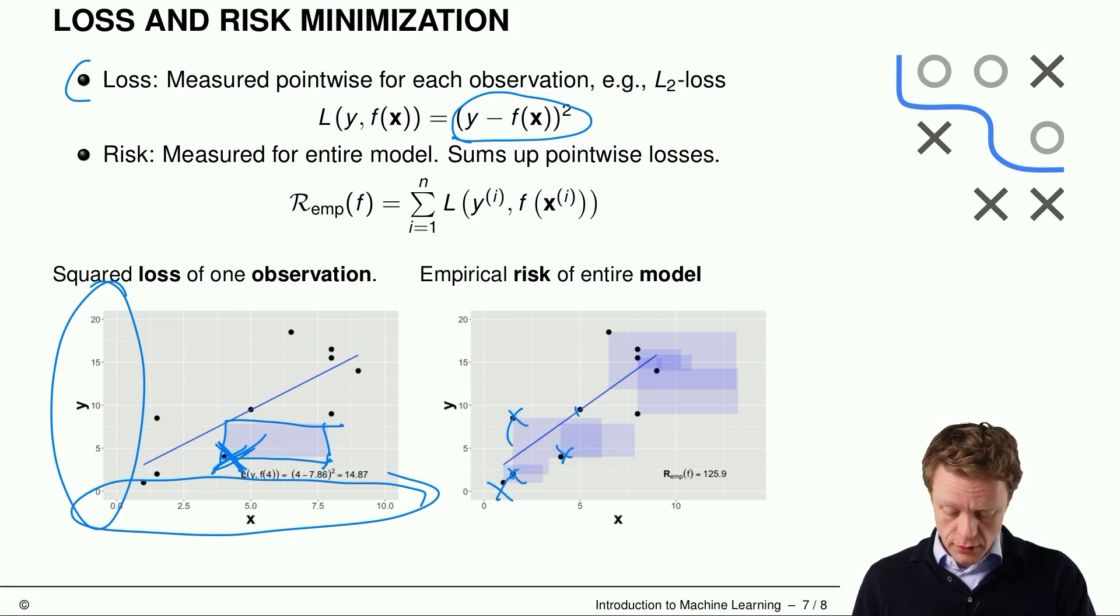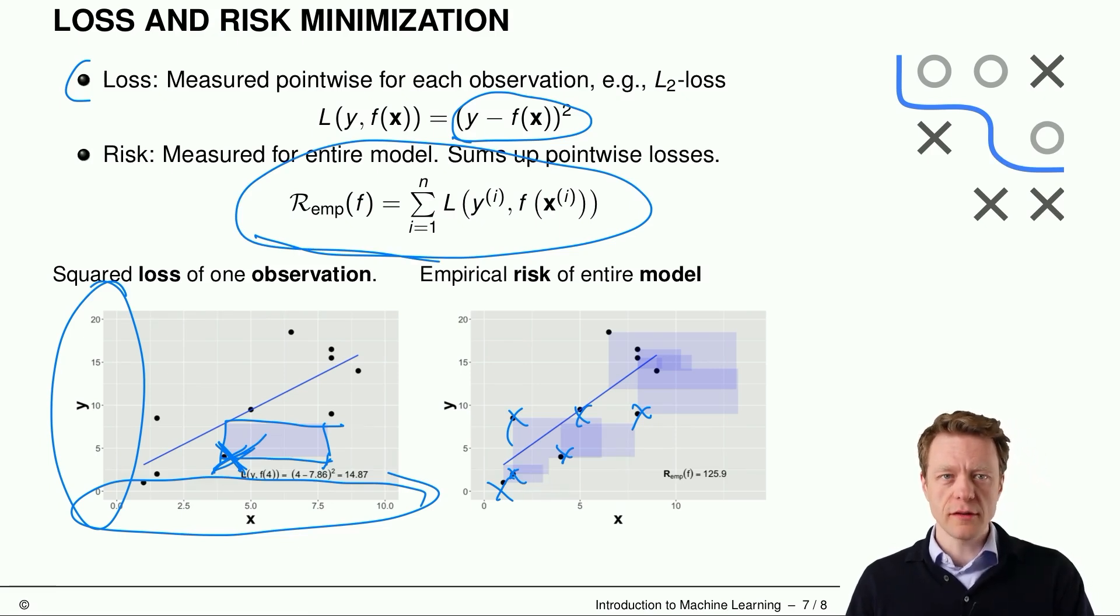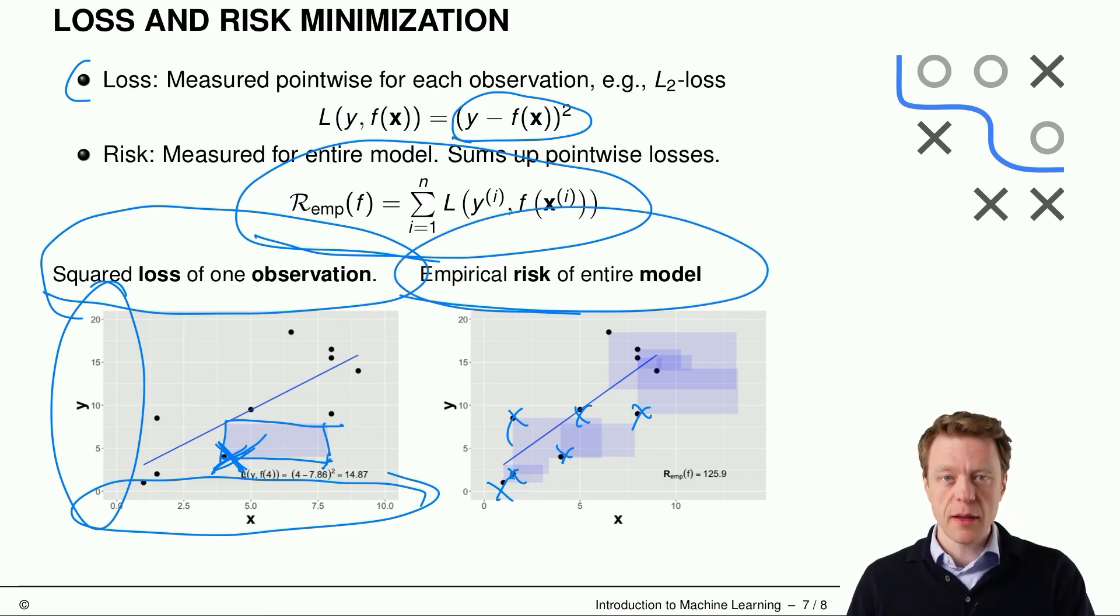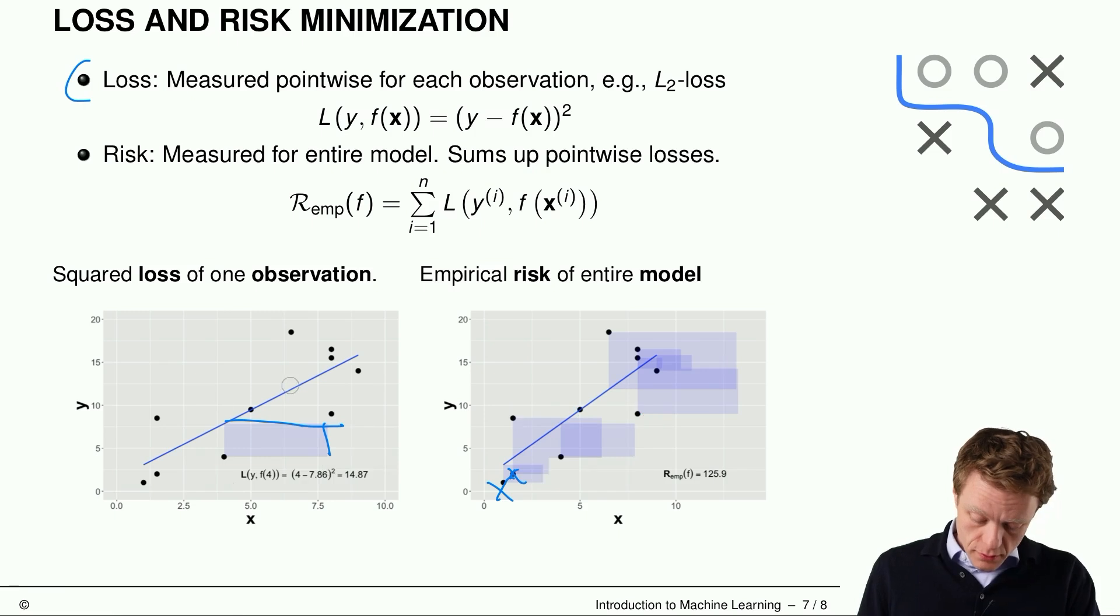So for all black dots here. And if we sum all those losses up, then we get the empirical risk. So the empirical risk is just the sum of the point-wise losses. So loss is something that measures for one observation how good the model is. And risk measures the same thing for the entire model.